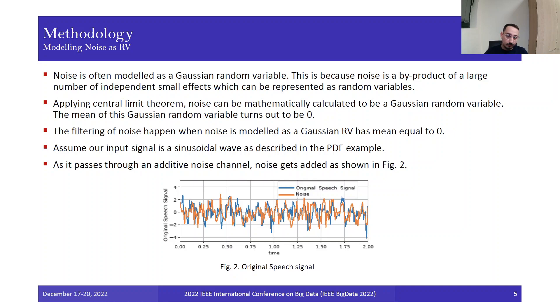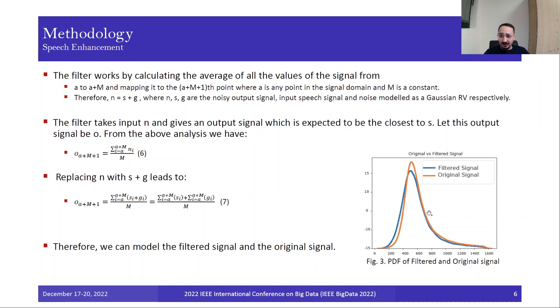A Gaussian random variable is the random variable used to describe the Gaussian distribution. The general form of the PDF of a Gaussian random variable X is of this form, so by changing m and sigma, we can plot different Gaussian distributions. Why is that important? Because we follow this step to model noise that happens on random variables. Noise is often modeled as a Gaussian random variable because noise is a by-product of a large number of independent small effects, which can be represented as random variables.